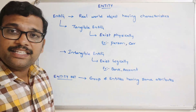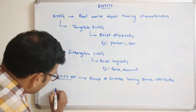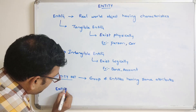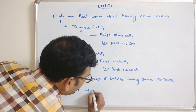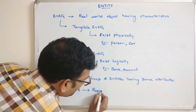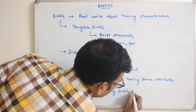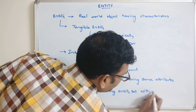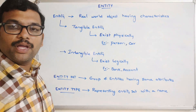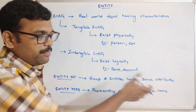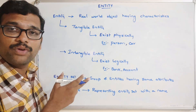And the complete entity set will be represented with a name called entity type. So the group of entities represented with some name is what we call an entity type. This entity type is also divided into two categories: strong entity type and weak entity type.